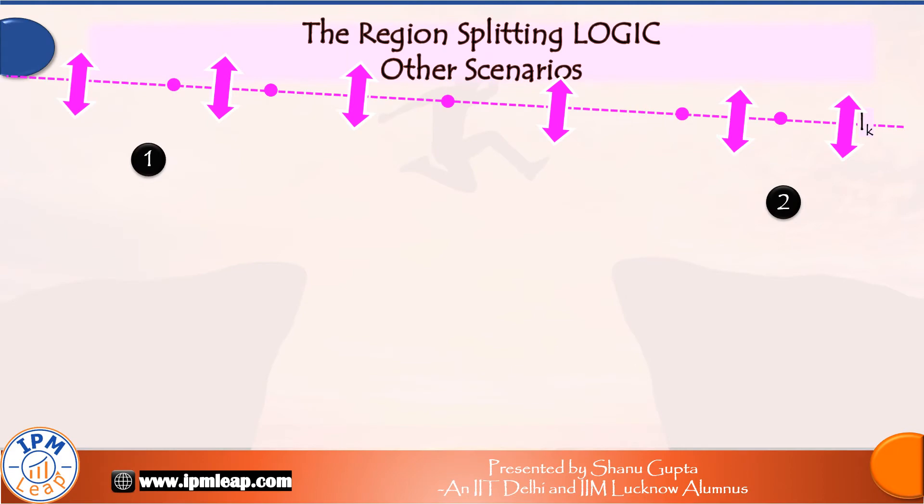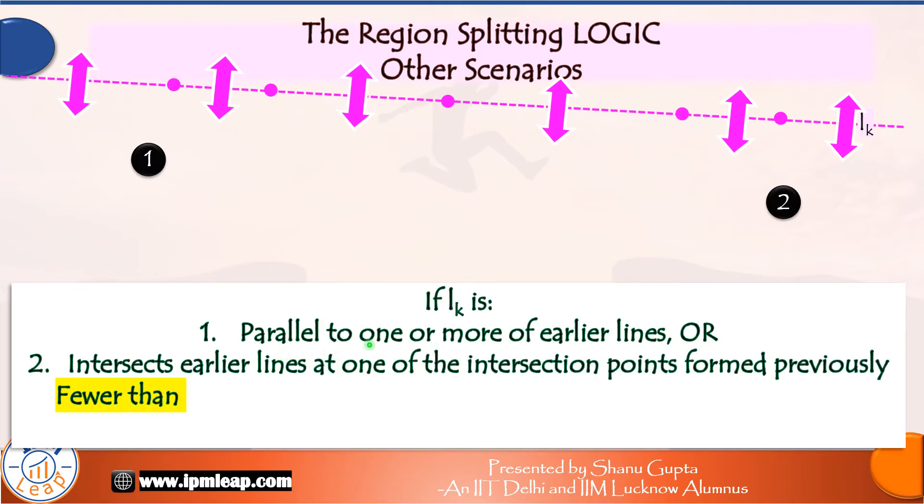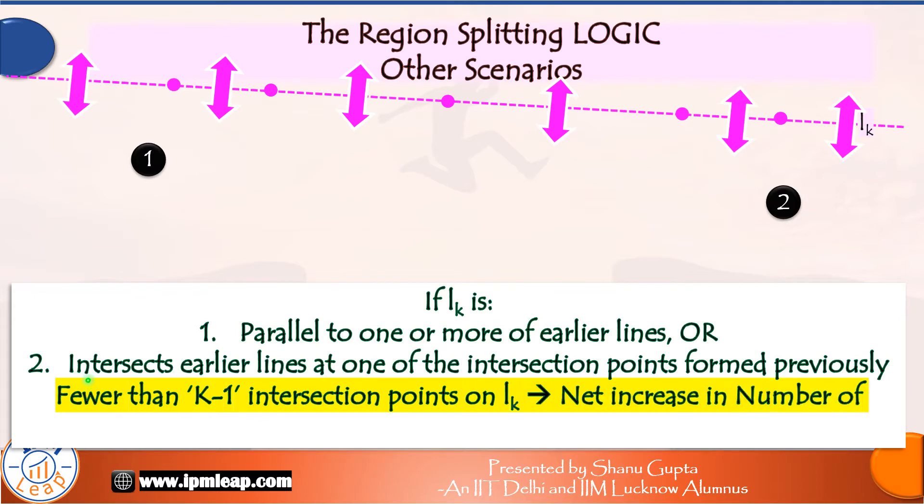At this stage, you might wonder, what are the other scenarios that are possible and why they will not maximize the number of regions? So, there are two other scenarios which are, if line number K is, number one, parallel to one or more of earlier lines or, number two, if line number K intersects earlier lines at one of the intersection points formed previously.